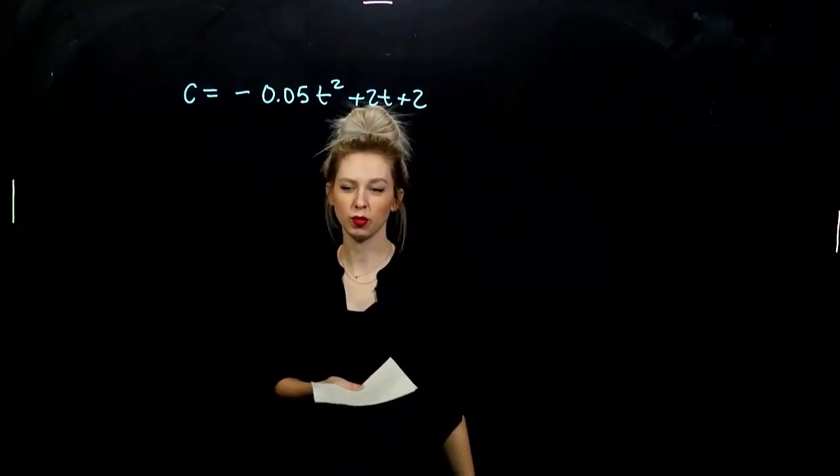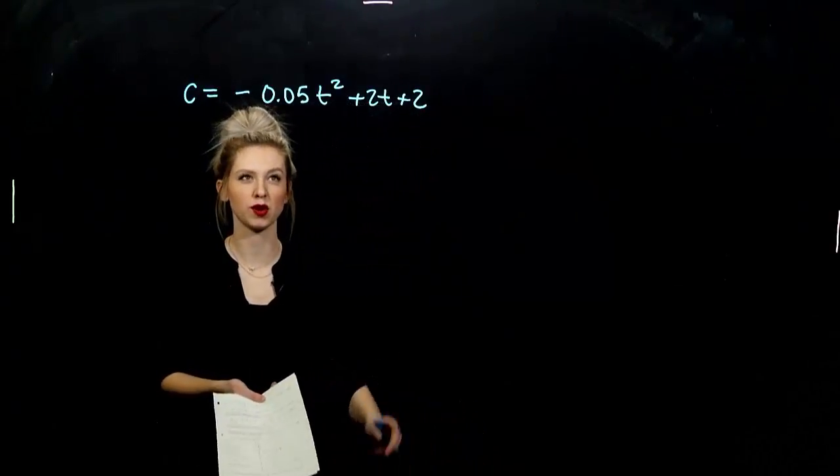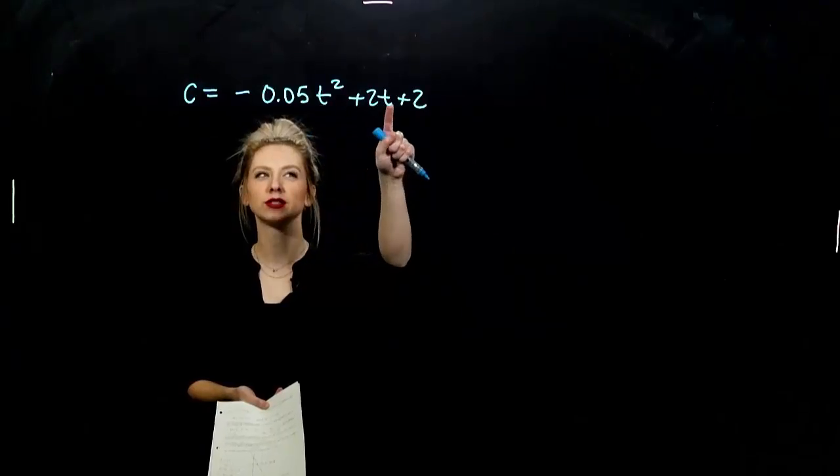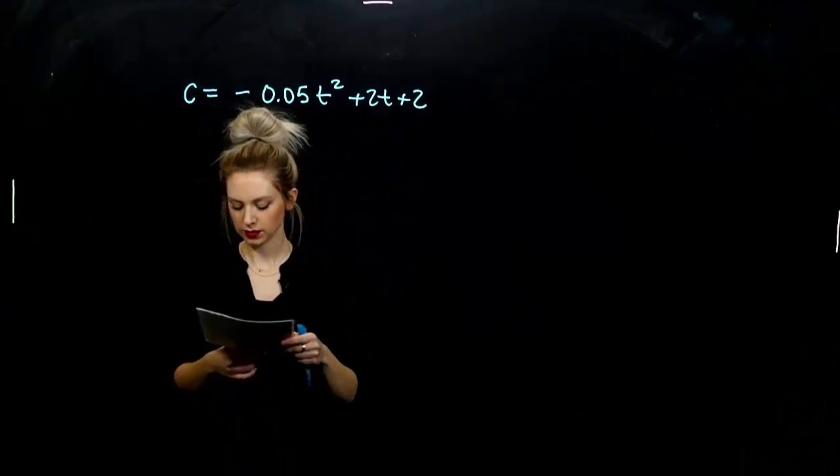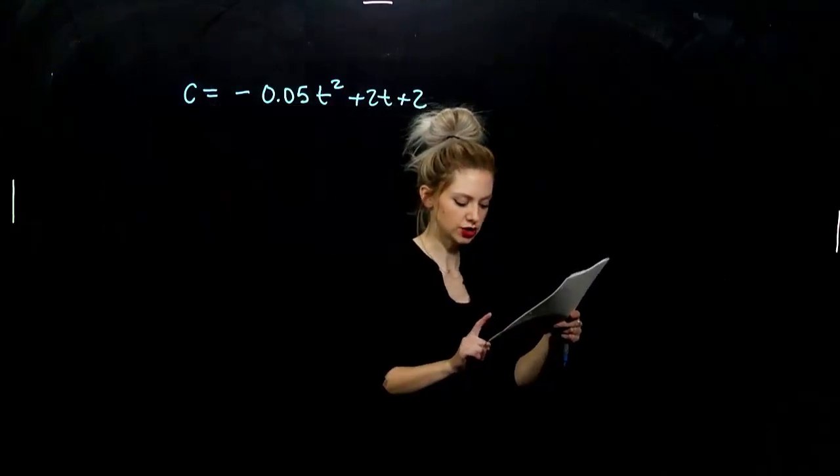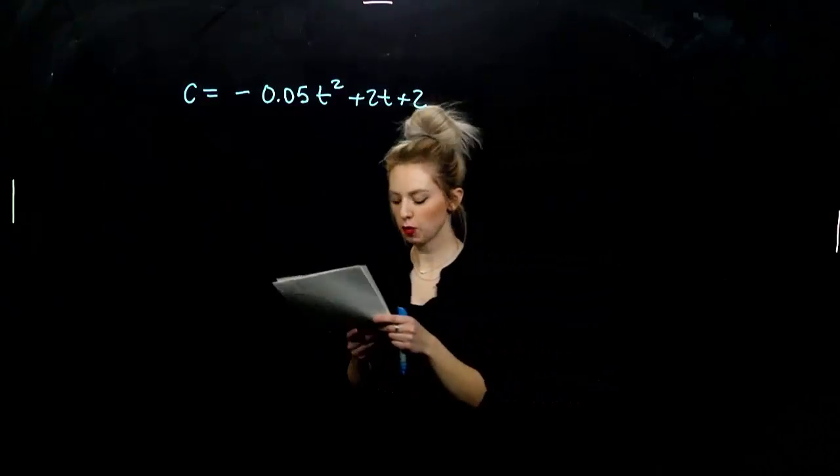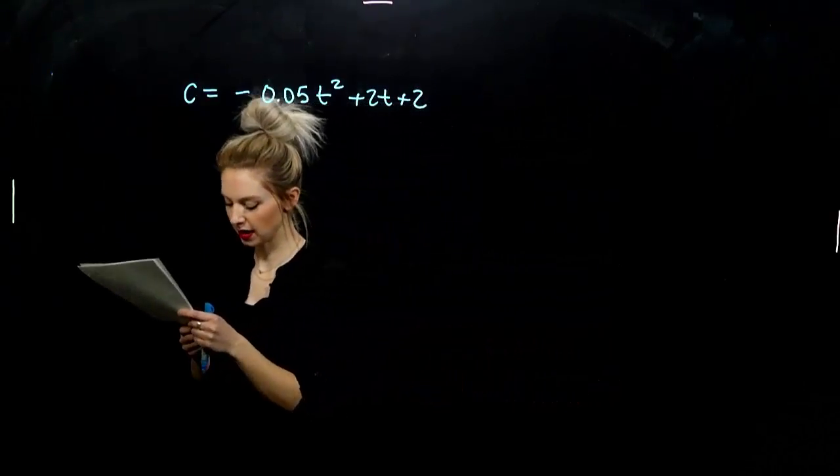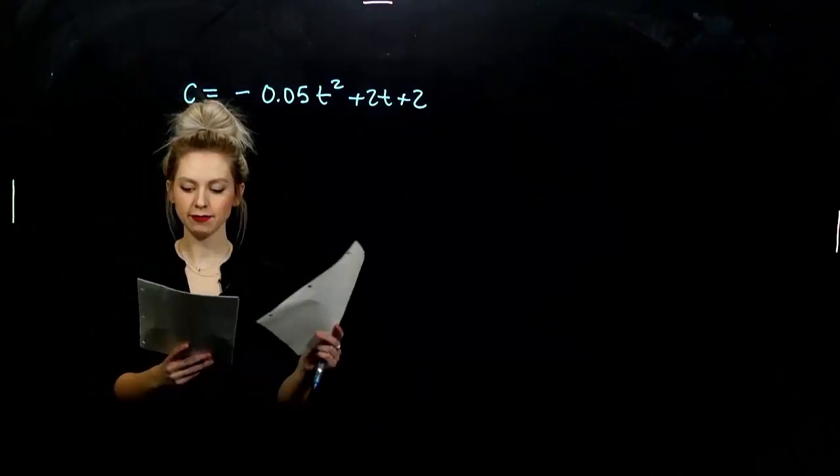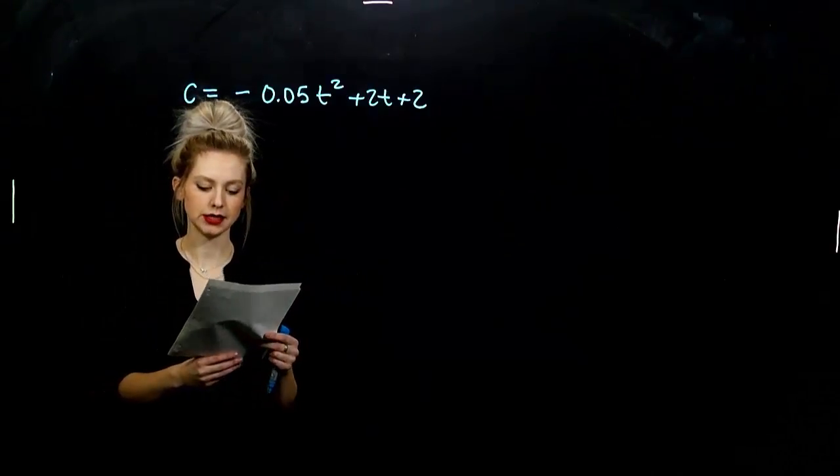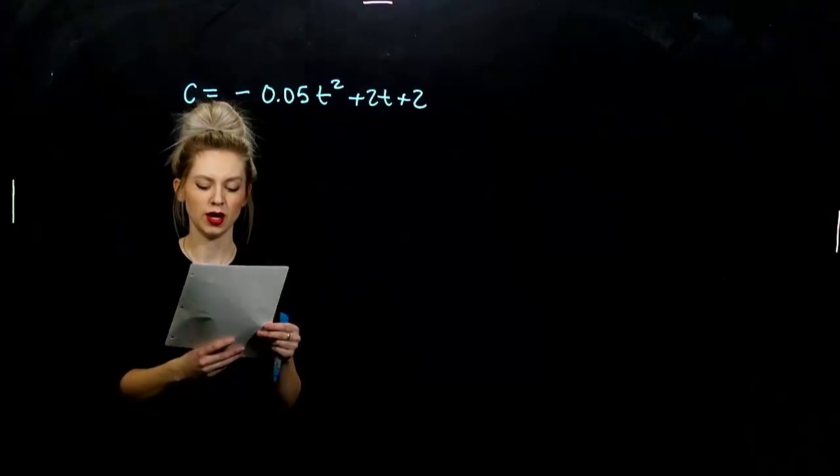Next example is dealing with a curvier polynomial. It's not linear anymore. We have higher powers than just one. So in this example, the concentration C in parts per million of a certain antibiotic in the bloodstream after T hours is given by this polynomial equation.